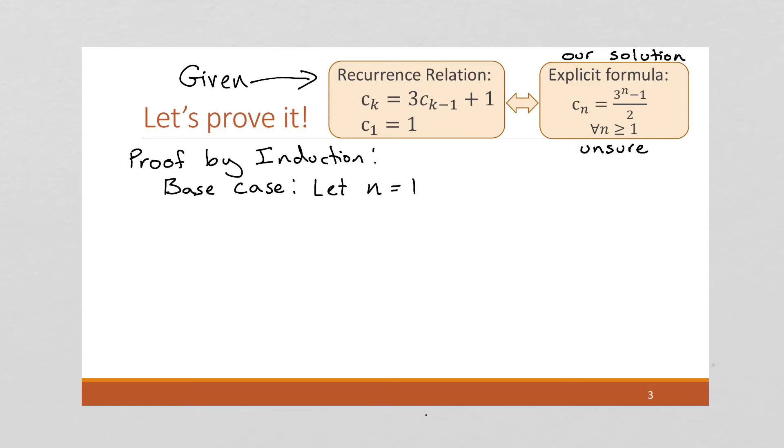So I'm going to start with the recurrence relation. And that's especially easy since c_1 equals 1 is given. We don't have to calculate anything. And then if we go to our explicit formula, we're going to calculate this for c of 1. So if we put this into the formula we came up with, this is 3 to the power of 1 minus 1 over 2, which is 3 minus 1 is 2 over 2 equals 1, which is the same as the recurrence relation. So our base case holds.